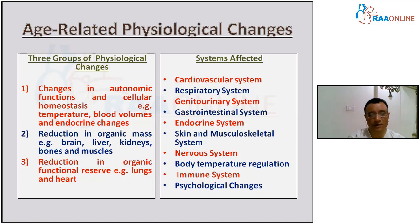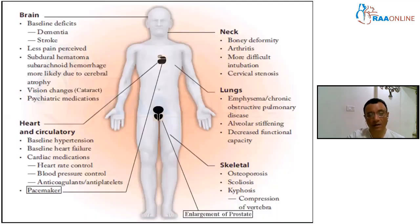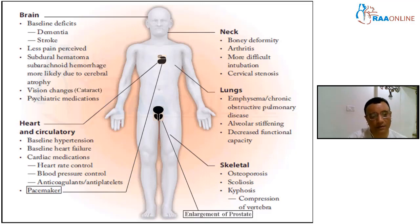The first group of changes includes temperature regulation, blood volume, and endocrine changes. Geriatric patients are very prone and sensitive to temperature changes, blood volume changes, and endocrine disorders such as diabetes and thyroid problems. The second group involves reduction in organ size — the brain, liver, kidneys, bones, and muscles all shrink as age advances. Third is reduction in organ function, such as lung volumes and cardiac output. Every system is affected: cardiovascular, respiratory, genitourinary, gastrointestinal, endocrine, skin, musculoskeletal, nervous system, body temperature regulation, immune system, cognitive function, and psychological status. In this lecture I will focus on prostatic enlargement for TURP in geriatric patients with a pacemaker.